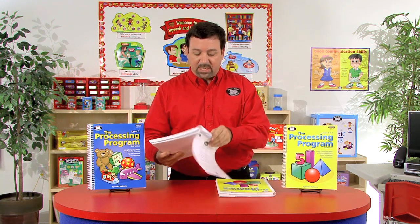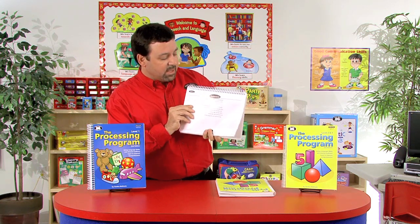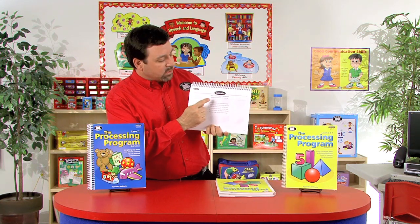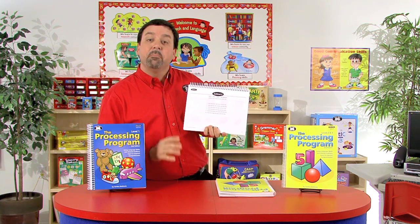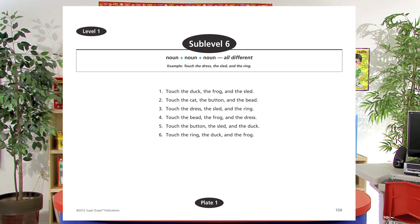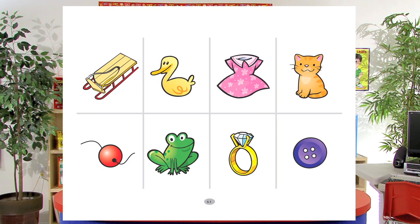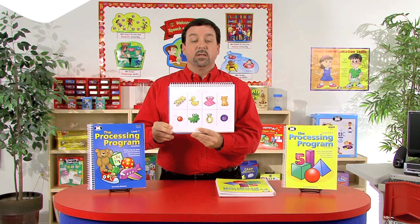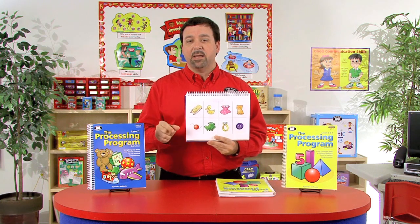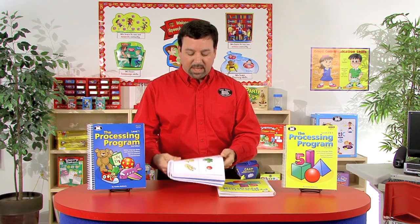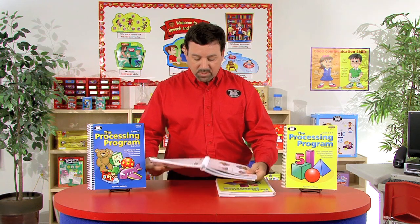Moving up to sublevel 6, we still target noun plus noun plus noun, but now all three items are different each time. The example is "touch the dress, the sled, and the ring." Prompts include: touch the duck, the frog, and the sled; touch the cat, the button, and the bead; touch the dress, the sled, and the ring. This increases difficulty by presenting three entirely different items each time the students respond.